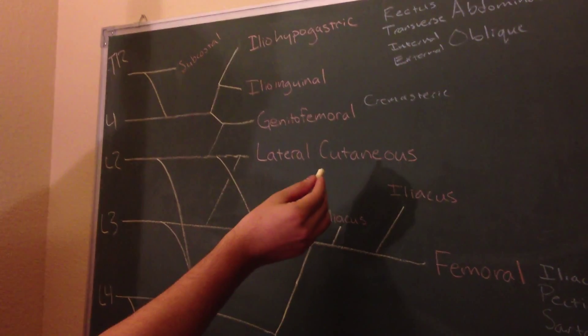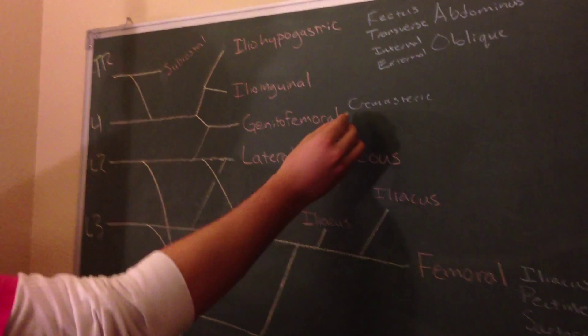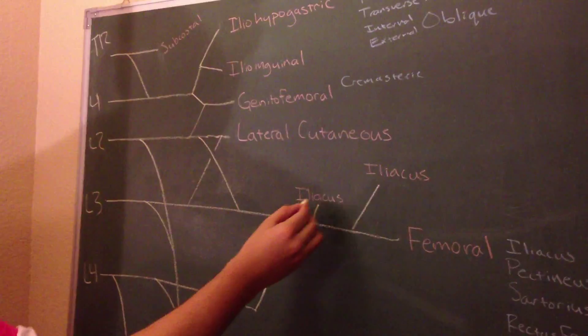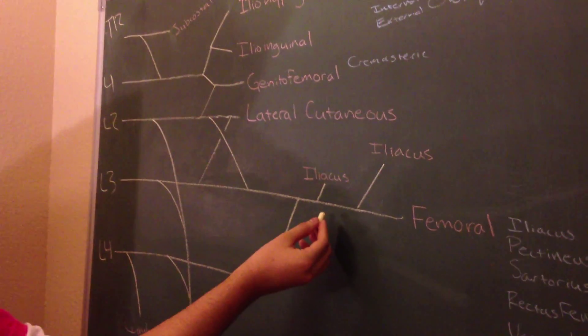The genitofemoral is a cutaneous innervating nerve, except in males where it controls the cremasteric muscle. Lateral cutaneous is a cutaneous nerve. Iliacus, both of these are for the iliacus muscle.